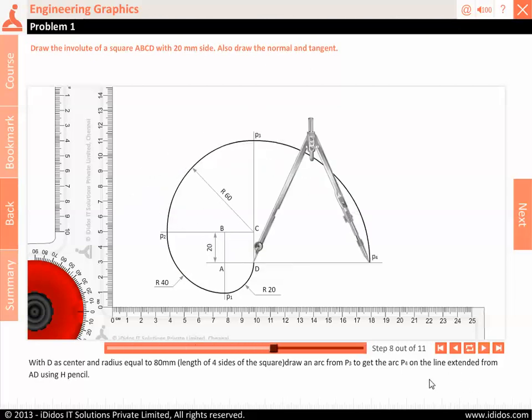With D as center and radius equal to 80 mm, length of four sides of the square, draw an arc from P3 to get the arc P4 on the line extended from AD using H pencil.